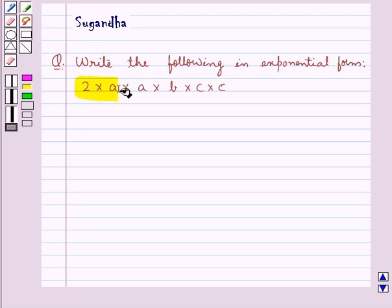2 into A into A into B into C into C. Let's see the solution now.